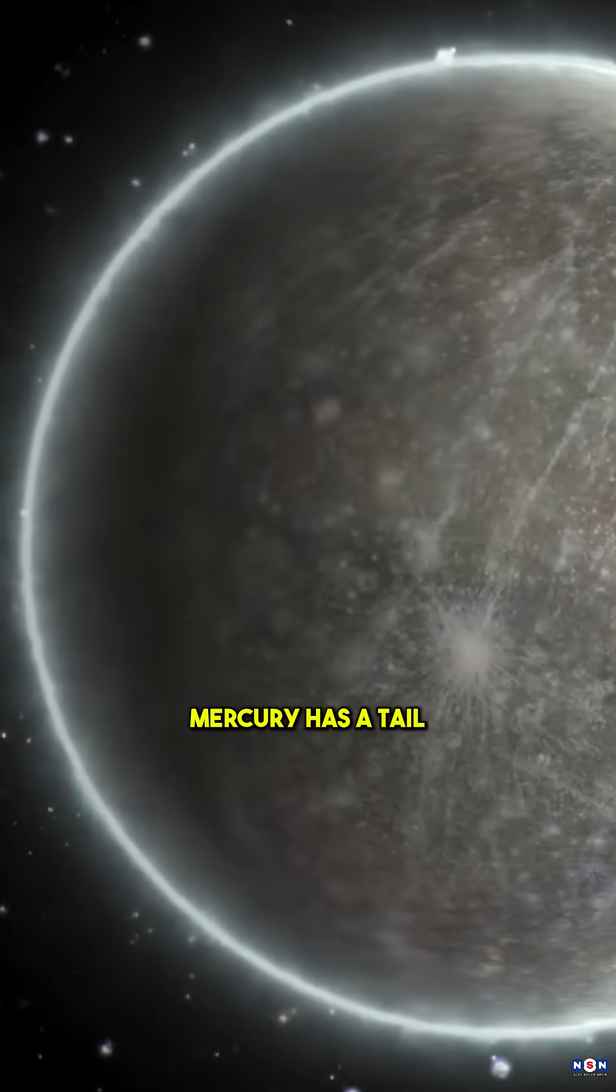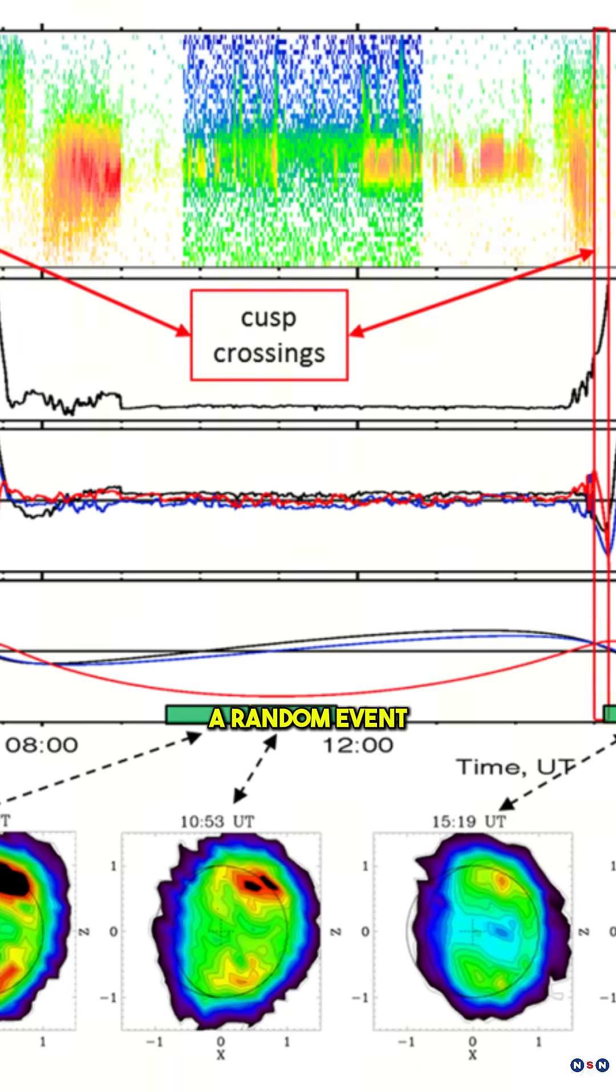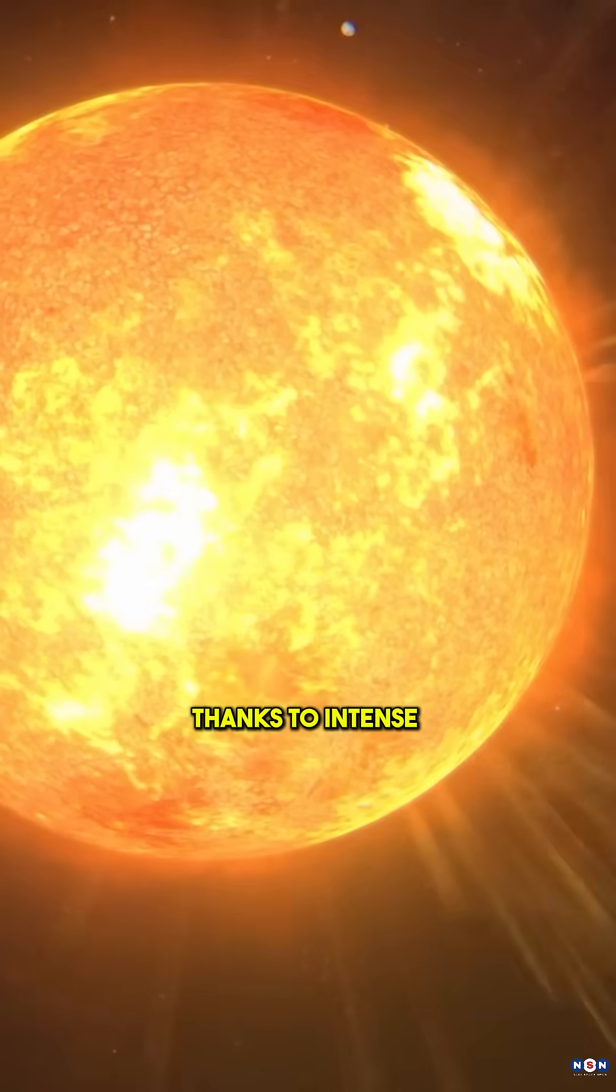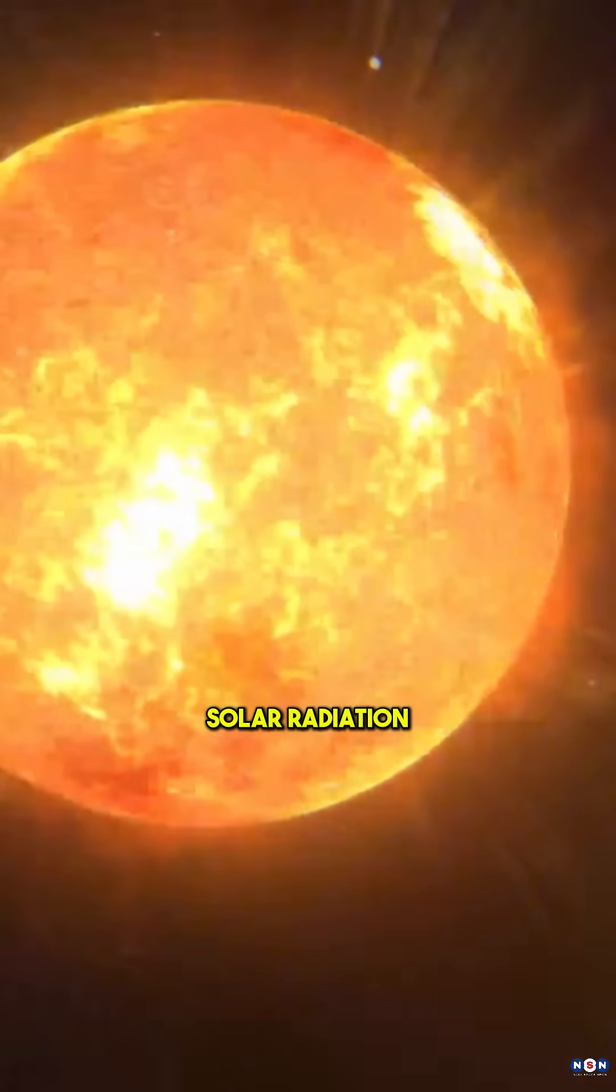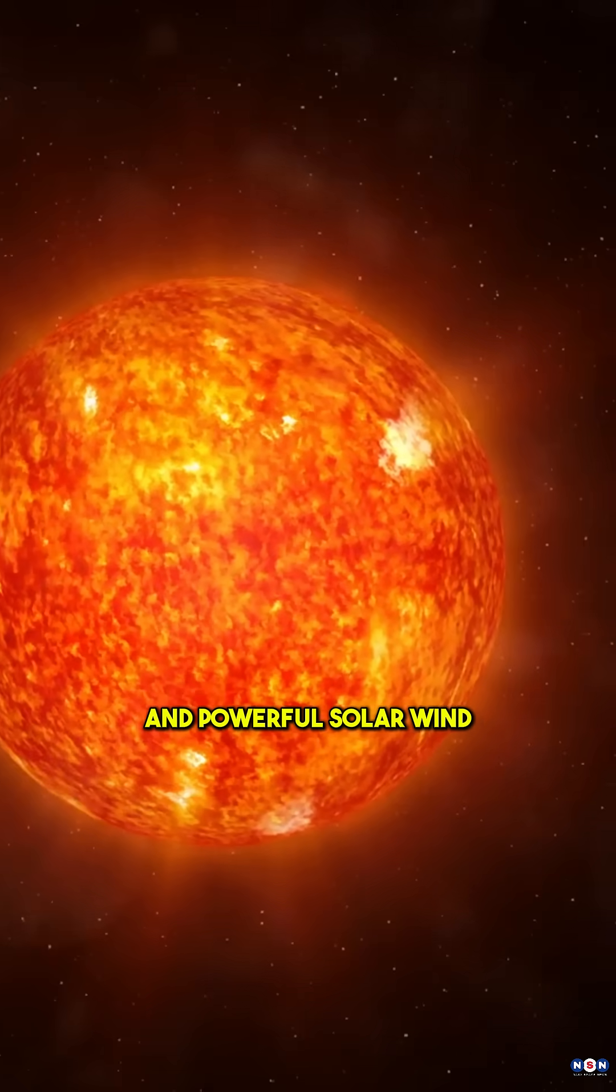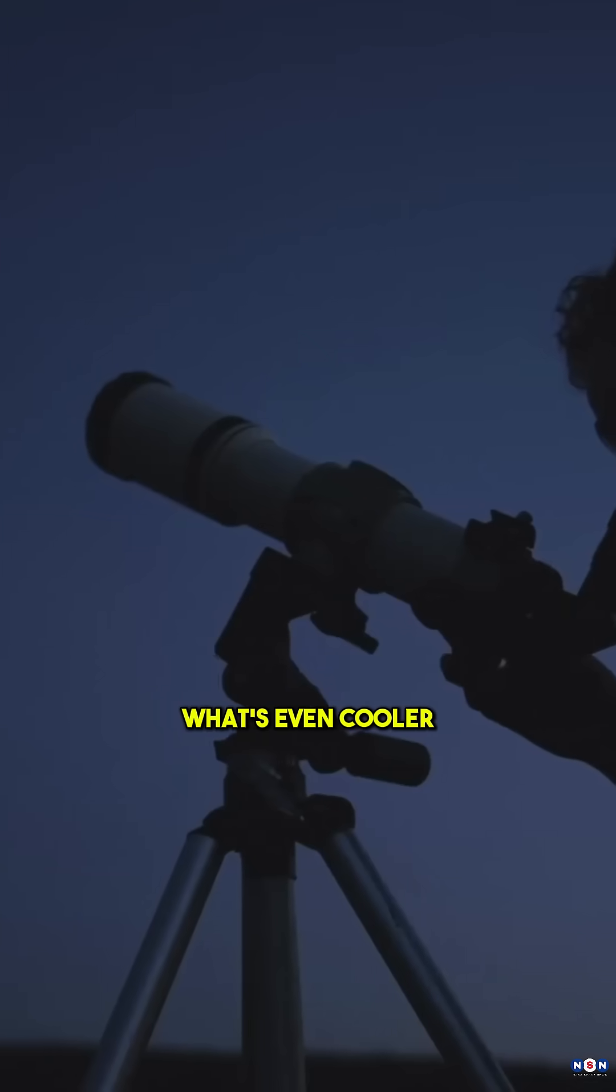That's right, Mercury has a tail. And it's not just a random event. This happens regularly, thanks to intense solar radiation, micrometeoroids smashing into the surface, and powerful solar wind. What's even cooler?